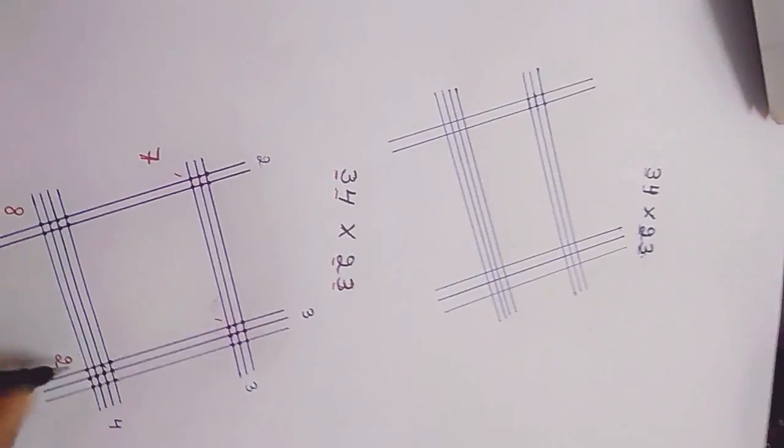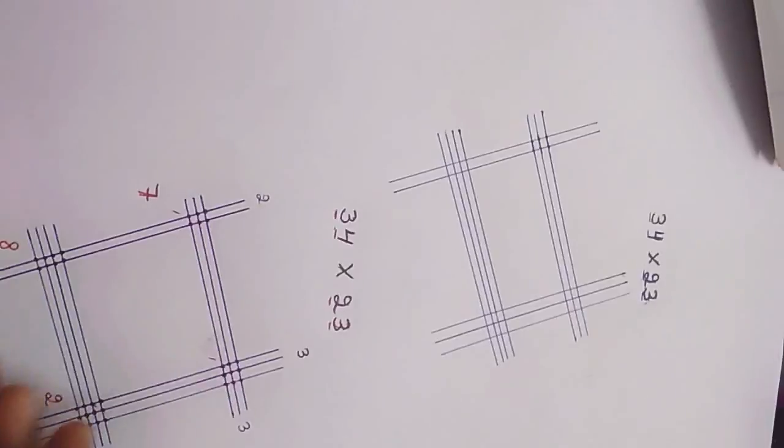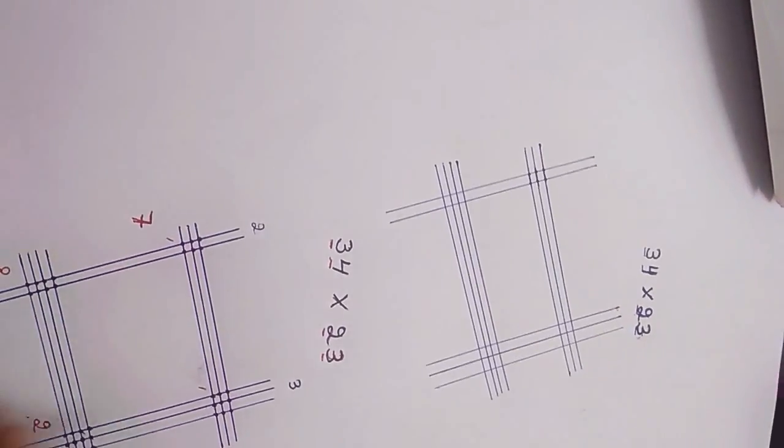So we have to write 2 here and 1 goes here. So we can write 2 here and 1 here.